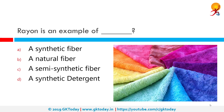Rayon is an example of a semi-synthetic fiber. Rayon is a manufactured fiber made from regenerated cellulose fibers. Modal is a type of rayon — a semi-synthetic cellulose fiber made by spinning reconstituted cellulose; in the case of modal, it is derived from beech trees.